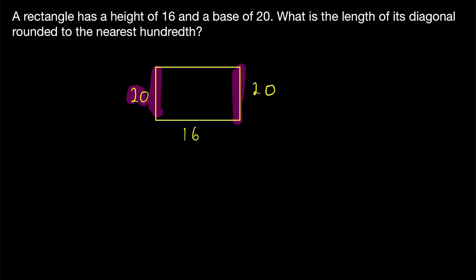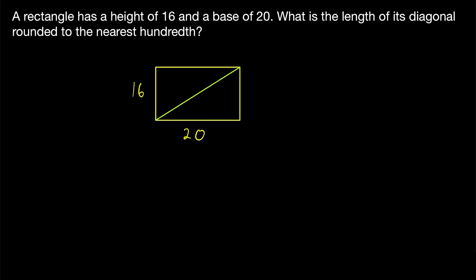In this rectangle, since we've drawn this side to look shorter, it seems reasonable to call that the side with length 16. We want to find the diagonal, so let's draw it in. This is a rectangle, so its angles are right angles, and we can apply the Pythagorean theorem.